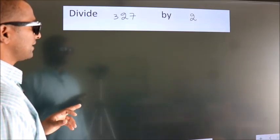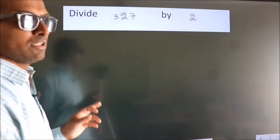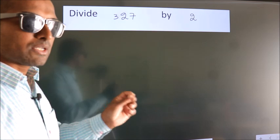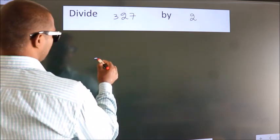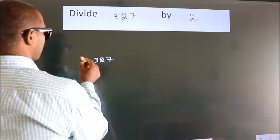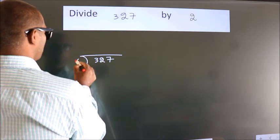Divide 327 by 2. To do this division, we should frame it in this way. 327 here, 2 here.